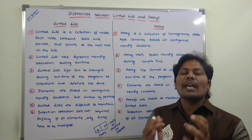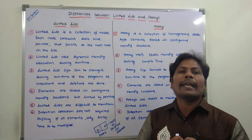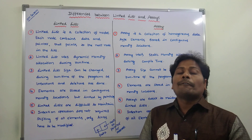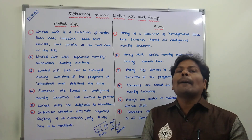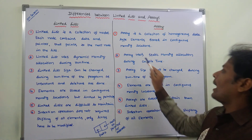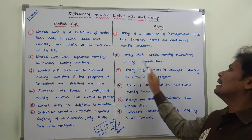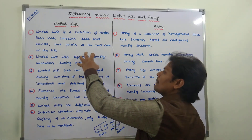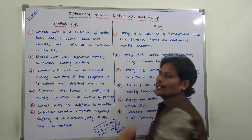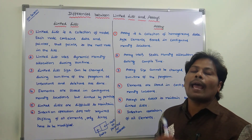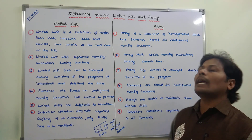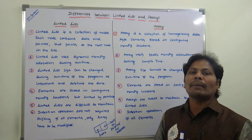In the case of arrays, there are some n number of elements and for all those elements we are allocating memory at compile time, so that is called static memory allocation. At runtime we are allocating memory for the nodes in the linked list using dynamic memory allocation, whereas for arrays we allocate memory for all elements at compile time — that is static memory allocation.